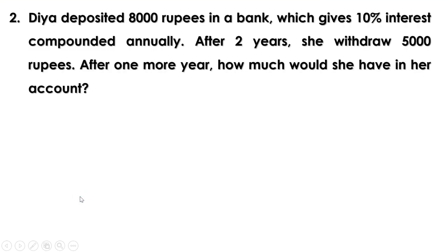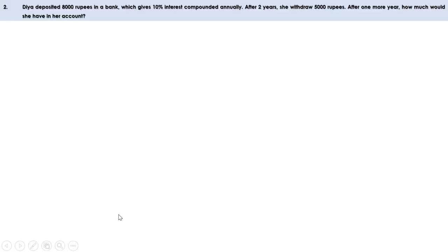Second problem: Diya deposited 8,000 rupees in a bank giving 10% interest compounded annually. After 2 years she withdrew 5,000 rupees. After 1 more year, how much would she have? We first find the amount after 2 years using the formula: P is 8,000 and R is 10%.